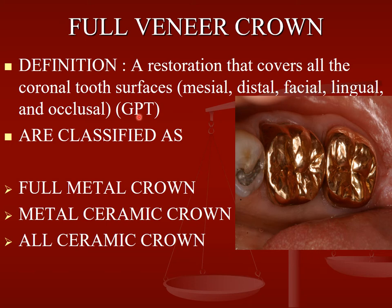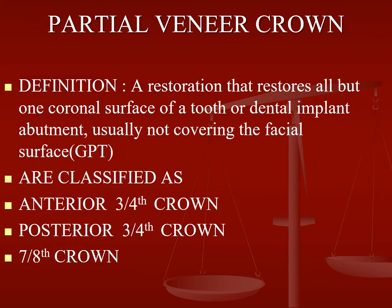Full veneer crowns are restorations that cover all of the coronal tooth surfaces — that is mesial, distal, facial, lingual, and occlusal — classified as full metal crown, metal ceramic crown, or all ceramic crowns. In an anterior three-fourth crown, it will not be covering the facial surface. A posterior three-fourth crown has a similar preparation from mesial to distal and occlusal.